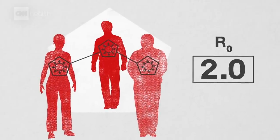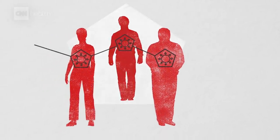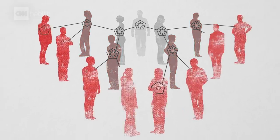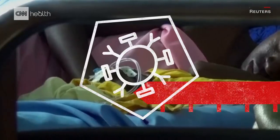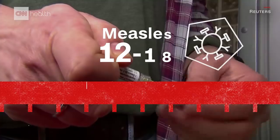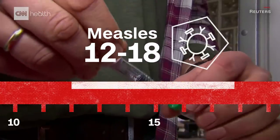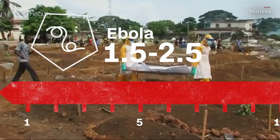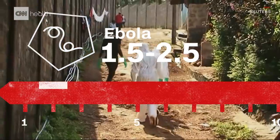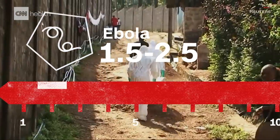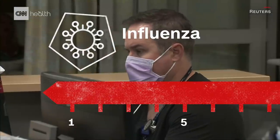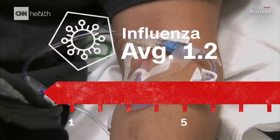An R-naught of two means that patient zero will, on average, infect two other people, who in turn can infect another two people, and so on. An infection like measles sits higher up the spectrum with an R-naught of between 12 and 18. At the lower end is something like Ebola, with an R-naught of 1.5 to 2.5. And while the flu varies from year to year, one study reports it averages to 1.2.